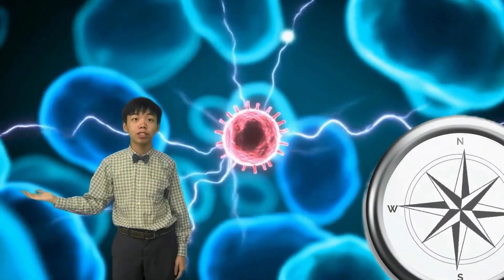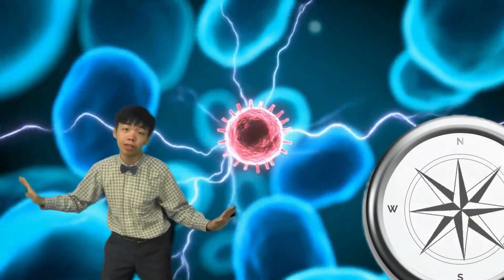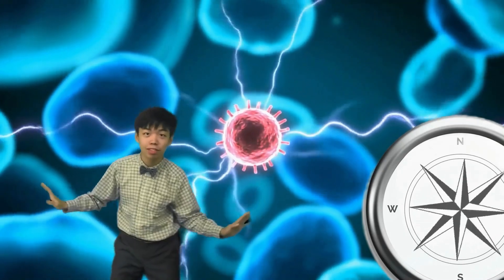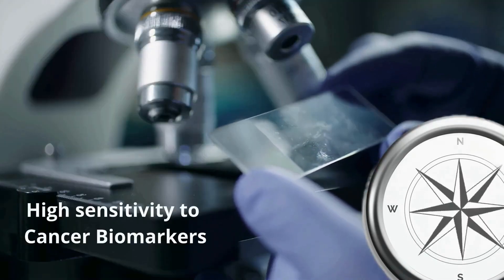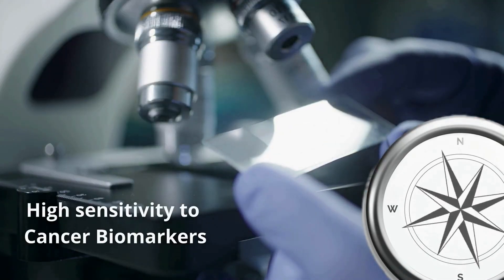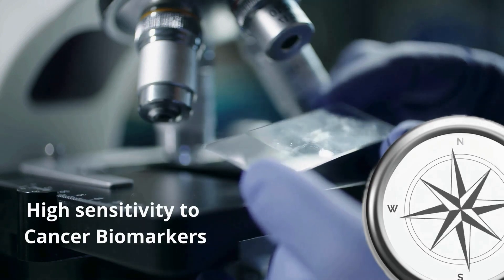The diamond NV Center is like a super sensitive compass that can detect the faintest magnetic fields nearby. Its extreme sensitivity could one day help detect cancer cells at very early stages when only a few rogue cells exist.